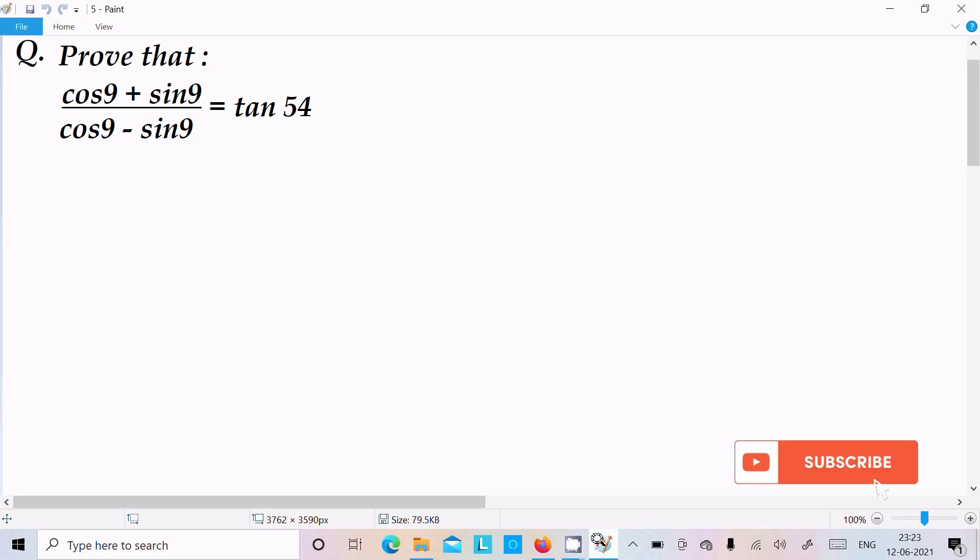In this lecture I'm going to prove that cos9 plus sin9 divided by cos9 minus sin9 equals tan54.